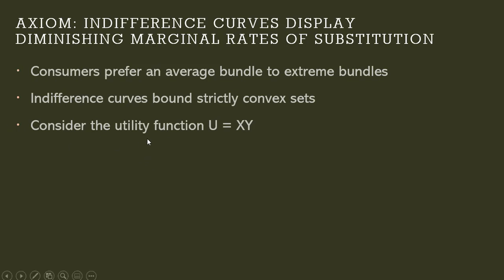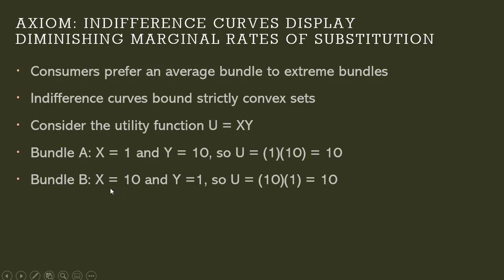So let's do an example. Consider the following utility function: utility equals X times Y. Bundle A consists of 1 unit of X and 10 units of Y, so the total utility, plugging those values in the utility function, is 10. And Bundle B contains 10 units of X and 1 unit of Y, and this also gives utility of 10.